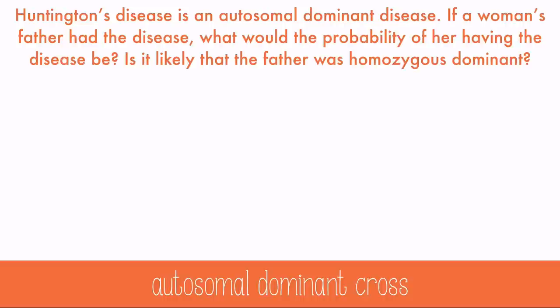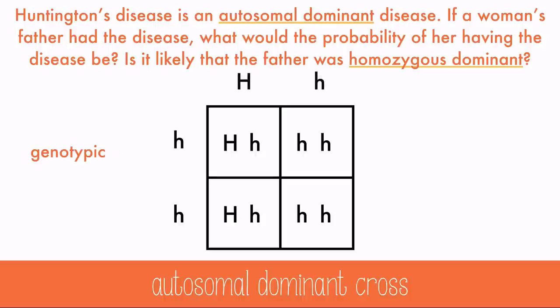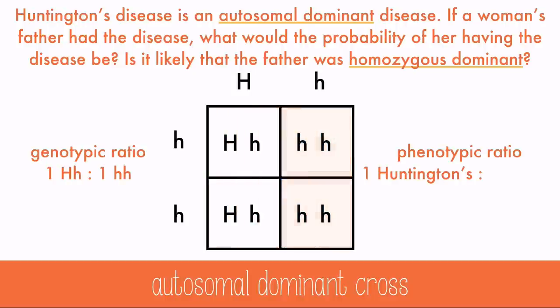If a woman's father had Huntington's disease, what would the probability of her having the disease be? Is it likely that her father was homozygous dominant? Since this is an autosomal dominant disease, recessive alleles are normal, meaning mom would have had a normal gene and only the father is affected. It's a very rare disease, so it's very unlikely he'd be homozygous dominant — he's probably just heterozygous. Filling out the Punnett Square, the genotypic ratio is one heterozygous to one homozygous recessive, and the phenotypic ratio is one to one Huntington's disease to normal — a 50-50 chance of the woman having Huntington's disease.